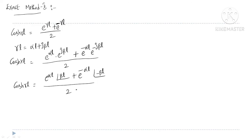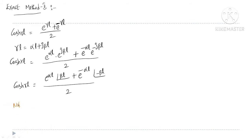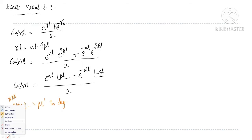One important thing to keep in mind: you need to substitute β l in degrees. We got α l and β l in radians, but here you need to substitute β l in degrees in order to get cosh(γl). This is a simple but important point to remember.